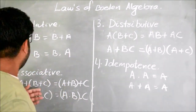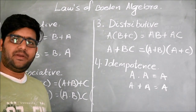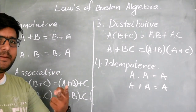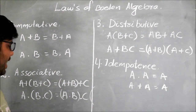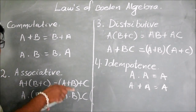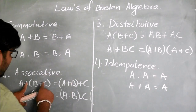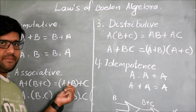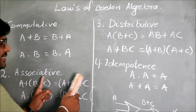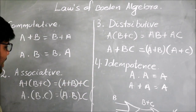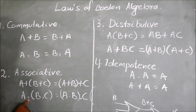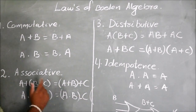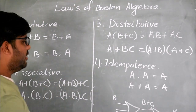The second law is the Associative Law. Associative Law means when A, B and C three inputs are associated, A OR (B OR C) equals (A OR B) OR C. Likewise, when A AND (B AND C) equals (A AND B) AND C. The bracket can be shifted with no issue.